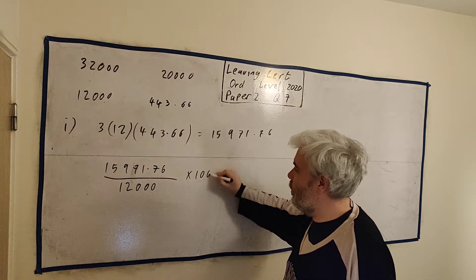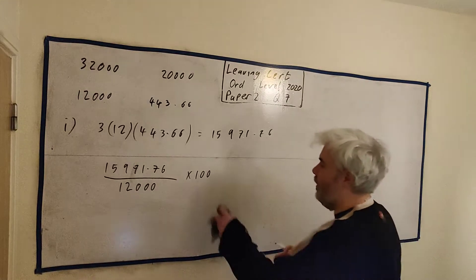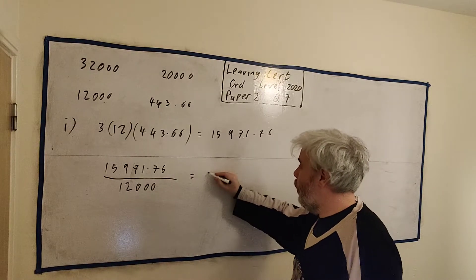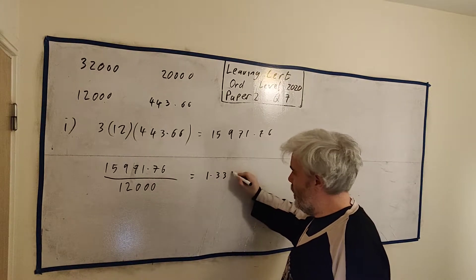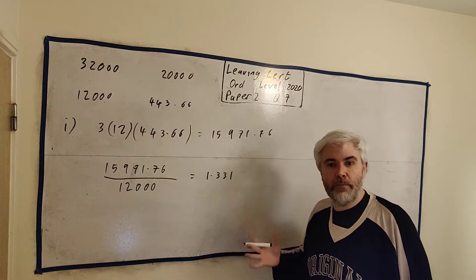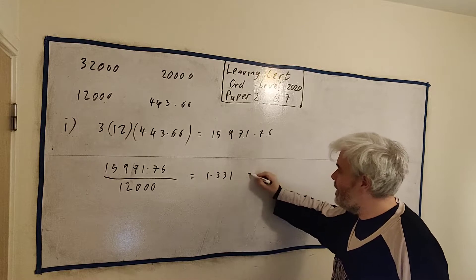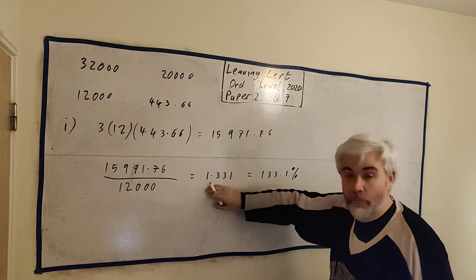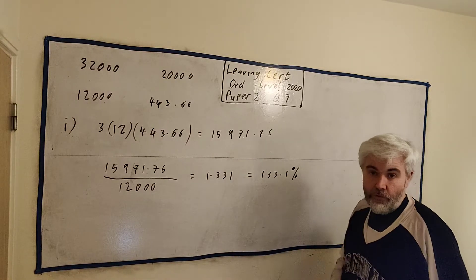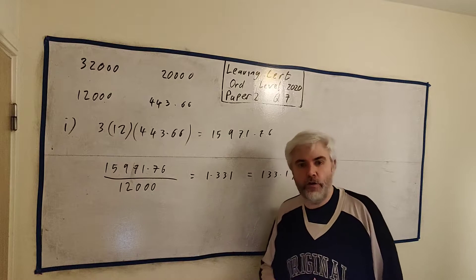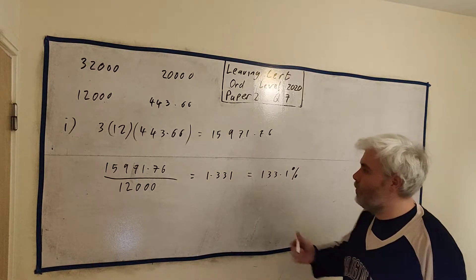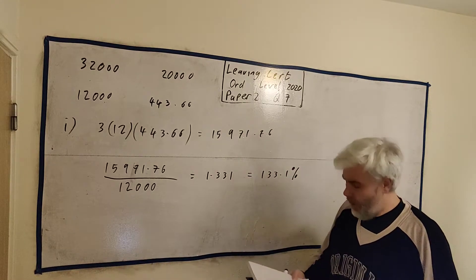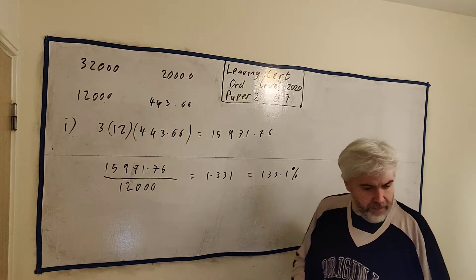He borrowed this much, he repaid this much. We want to find what percent of this is this. They even give us the answer, so we can do this question twice, make a mistake, and know which one's right. So we take 15,971.76 and divide it by the number we want the percentage out of, so 12,000. We can multiply it by 100. If we put this into a calculator, we will get out 1.331, which is how we write percent. This number is the same as 133.1%. That's part A done.